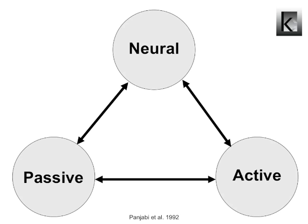According to Panjabi, three subsystems work together to maintain joint stability: the central nervous subsystem for control, an osteoligamentous subsystem for the passive structures in the joint, and a muscle subsystem representing the active structures. The stability provided by the MCL is of a passive kind.